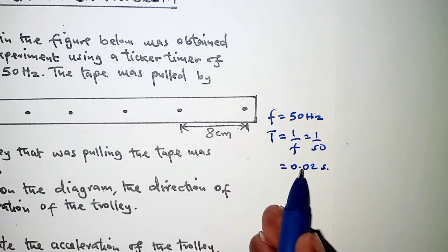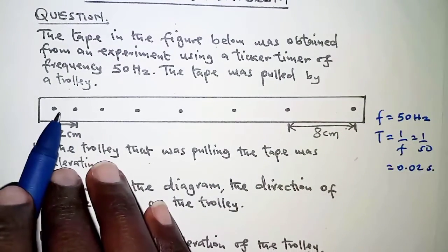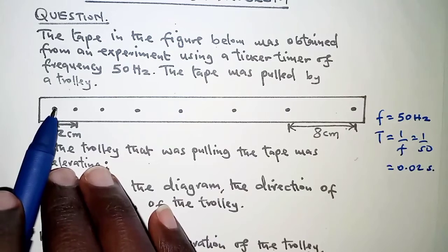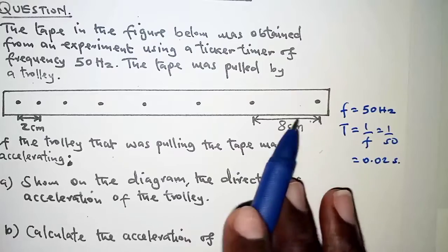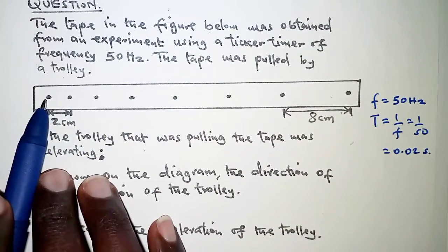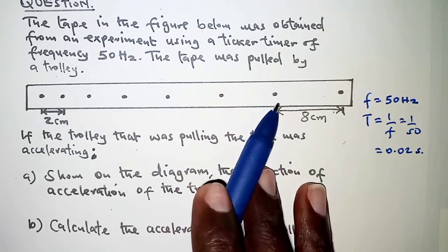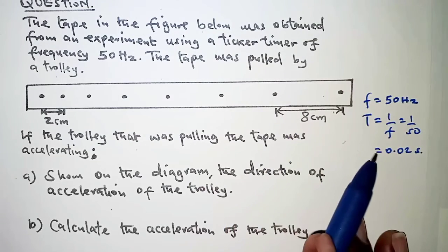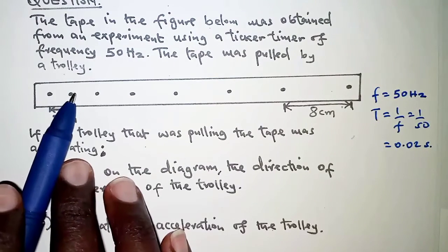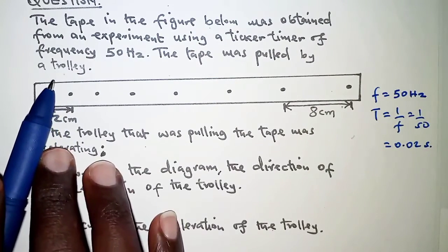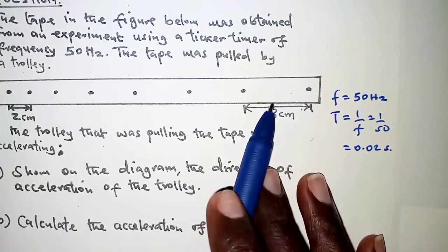So for each interval the time is 0.02 seconds. Now look at the spacings: in the beginning it is 2 centimeters, and at the end it is 8 centimeters. Here it's a shorter distance within 0.02 seconds, and at this end it's a longer distance — 8 centimeters — but the time is still the same. So for the shorter distance within the same time, the speed or velocity is lower than for the longer distance within the same time.